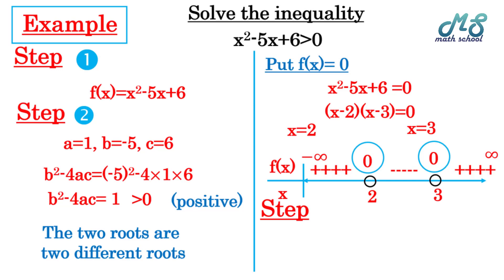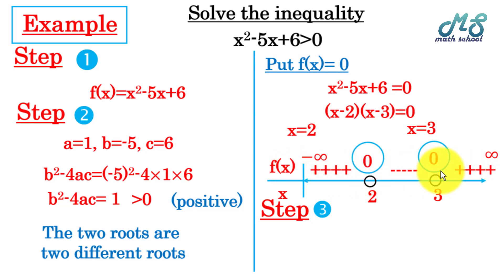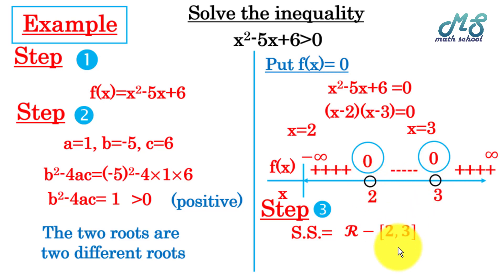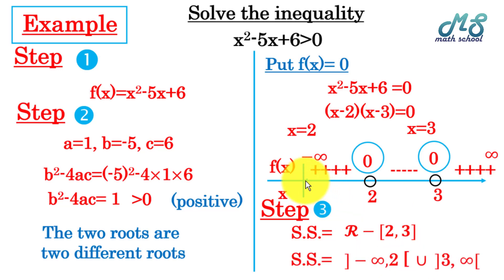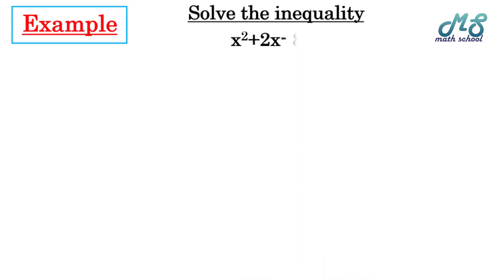Step 3: set the solution set of the inequality. Since x² - 5x + 6 > 0 means the positive interval, we take from negative infinity to 2 and from 3 to positive infinity. The solution set is ℝ minus the closed interval [2, 3], or written as the union of two intervals: (-∞, 2) ∪ (3, +∞).